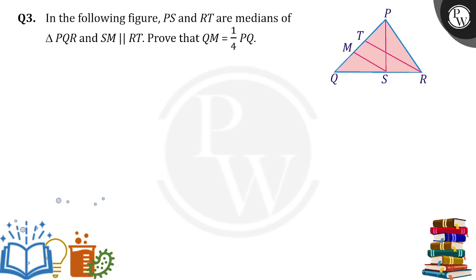Hello everyone. In the following figure, PS and RT are the medians of triangle PQR and SM is parallel to RT. Prove that QM is equal to 1 by 4 times of PQ.